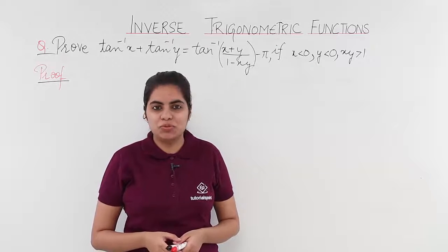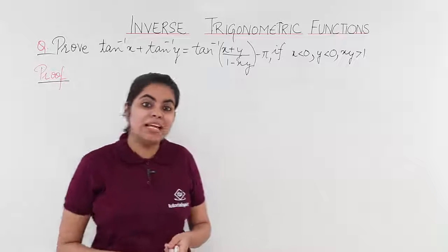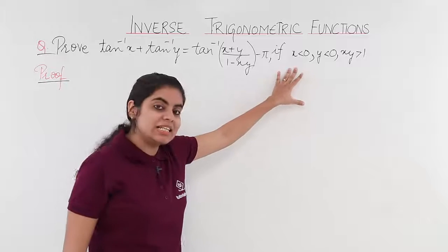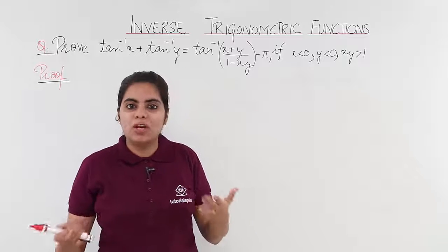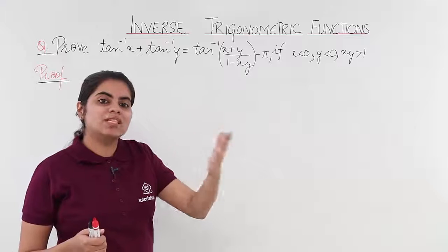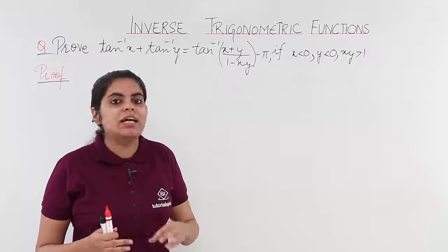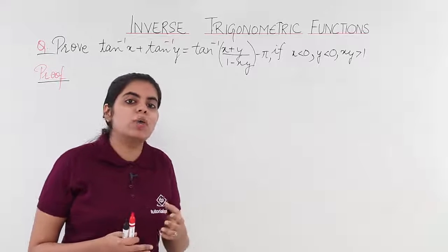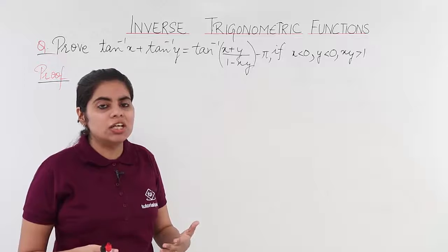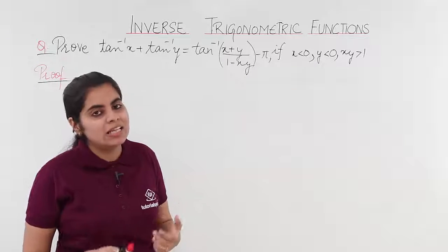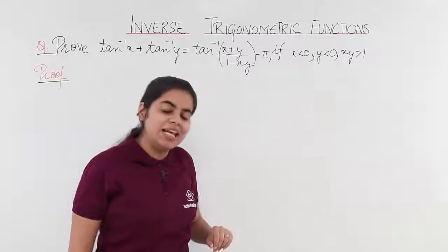In this video, let's see the proof of the formula for tan⁻¹x + tan⁻¹y, wherein the conditions are different: x < 0, y < 0, and xy > 1 are given. So the formula also changes. As we saw in the previous two videos, the formula was tan⁻¹((x + y)/(1 − xy)), but here we also have π, and it is minus π. As the conditions change, the basic formula also changes — this is what we will see in the proof. Let's get started.